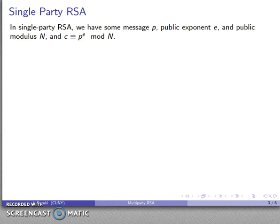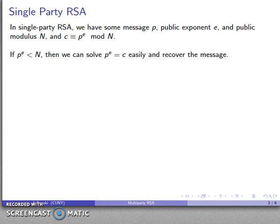Why does that work? Let's consider why single-party RSA works. In single-party RSA we have some message P, our public exponent E and a public modulus n, and our ciphertext is P to the power E mod n. The reason it could potentially fail is if P to the E is strictly less than our modulus, then P to the E is just whatever the value is — it won't be reduced at all — and P to the E equals our ciphertext. I can solve this equation easily by taking the E-th root of the ciphertext.